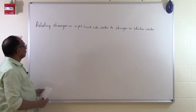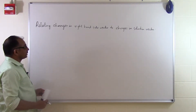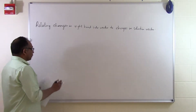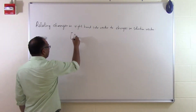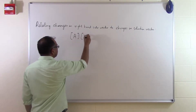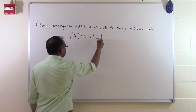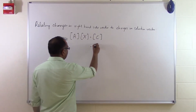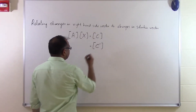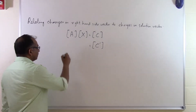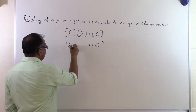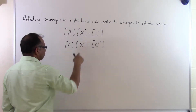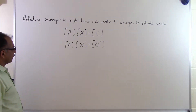In this segment we'll talk about how we can relate changes in the right hand side vector to changes in the solution vector. Suppose we are solving a set of equations like Ax = C, and then we make a change to the right hand side to get C prime. So we get A times X prime, because if we change the right hand side vector, the solution vector is also going to change.